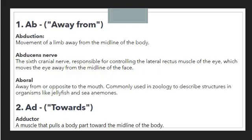The first prefix we are going to discuss is 'ab'. Ab means away from. Whenever you want to convey a sense of away movement or movement away from something, we will use the prefix 'ab'. Here are a couple of examples: abduction, abducens nerve, and aboral — all beginning with the prefix 'ab', which represents the 'away from' movement.